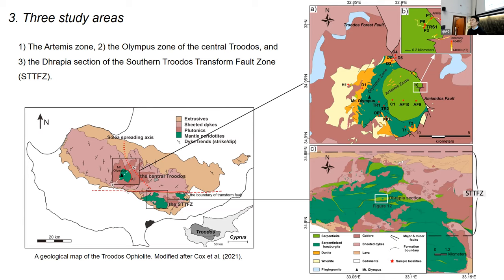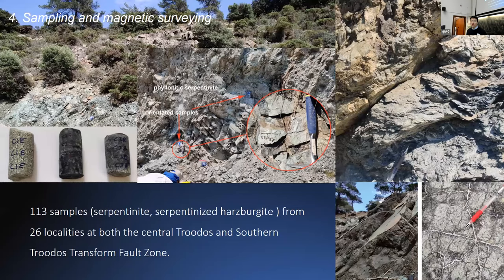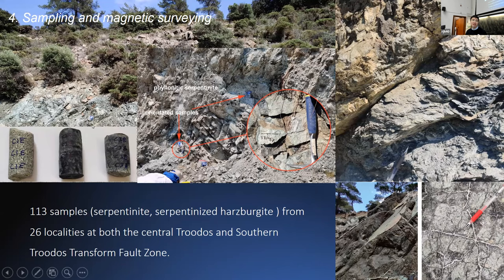We collected over 100 samples, including serpentinite and serpentinized harzburgite from 26 localities across the central Troodos and the Solea transform fault zone. For some localities, because the rocks are very foliated, making drilling impossible, we took oriented hand samples. These are three samples from the Solea transform fault zone, and these are some fractured rocks from the central Troodos.